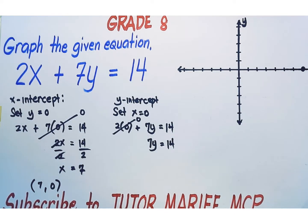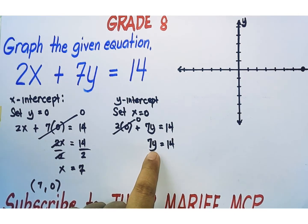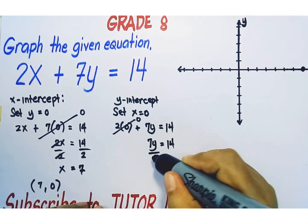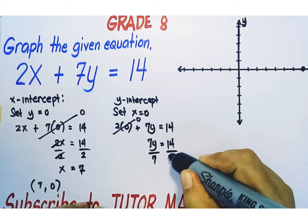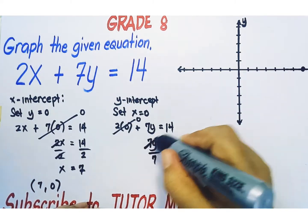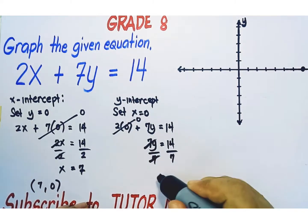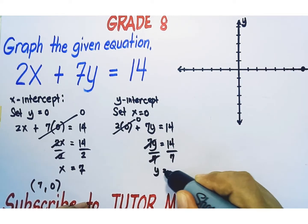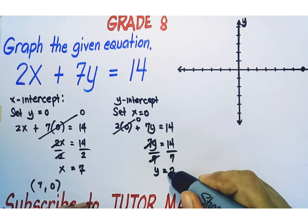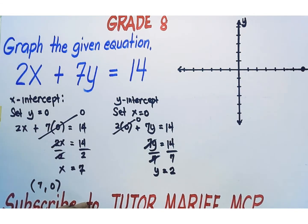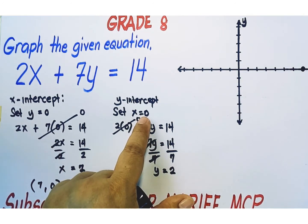7y equals 14. We isolate y by dividing both sides of the equation by 7. Cancel out 7. y equals 14 divided by 7, which equals 2. This is the y-coordinate of the y-intercept of the line.